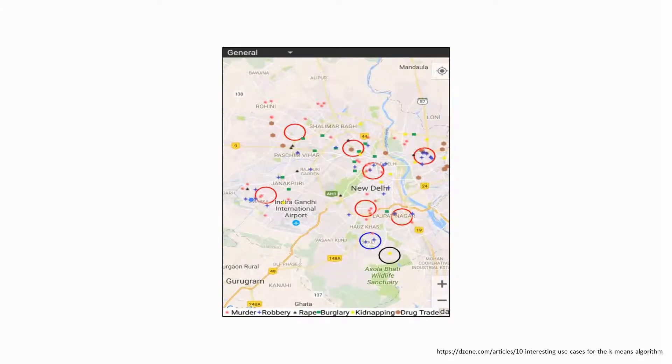K-means also was successfully used in identifying crime localities. With data related to crimes available in specific localities in a city, the category of crime, the area of the crime and the association between the two can give quality insight into crime-prone areas within a city or locality.